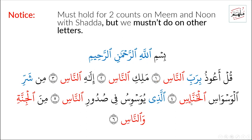Another example: min sharri al-waswasi al-khannasi — we hold on 'al-khannasi.' And also: al-lazi yuwaswisu fi sudurin naas — on 'al-lazi' we don't hold; we pronounce the Shadda as normal. Al-naas, min al-jinnati — we hold on the Nun. Wal-naas — in this way.